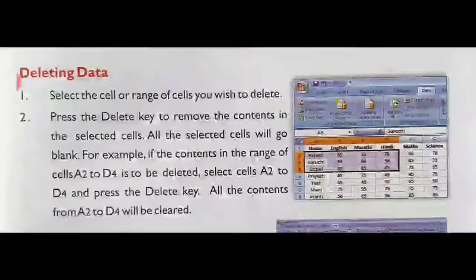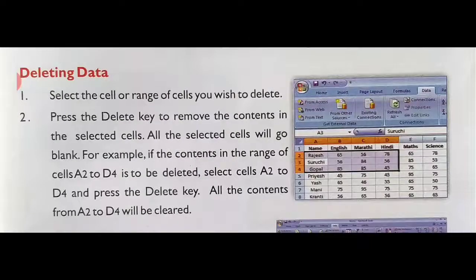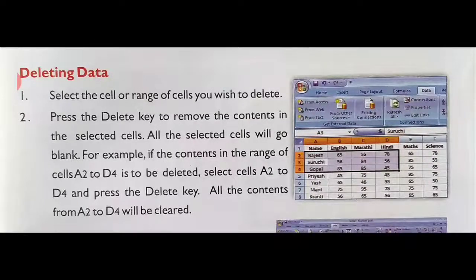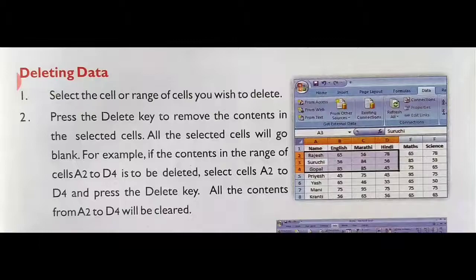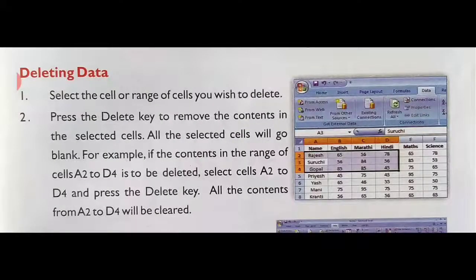Next is deleting data. Select the cell or range of cells you wish to delete, then press the Delete key to remove the contents in the selected cells — all the selected cells will go blank. For example, if the contents in the range A2 to D4 is to be deleted, select A2 to D4 and press the Delete key; all the contents from A2 to D4 will be cleared.